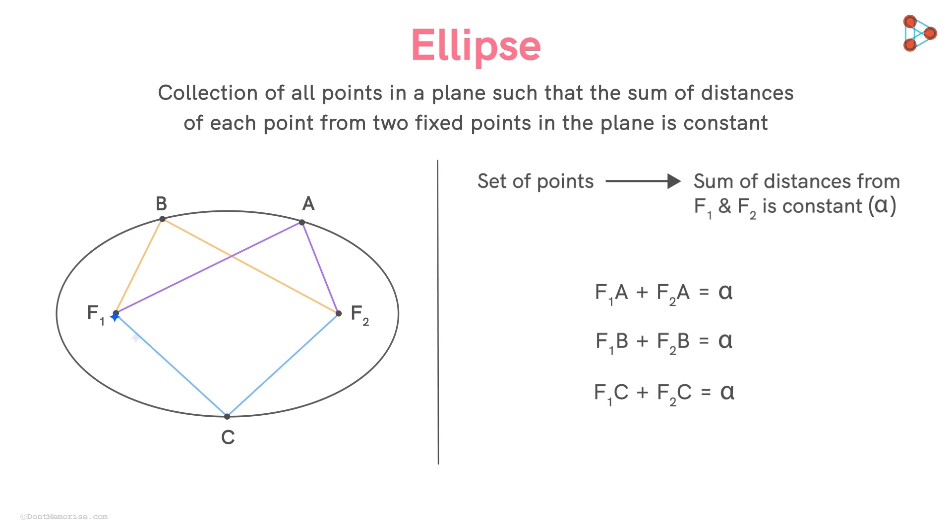Each fixed point F1 and F2 is called the focus of the ellipse. And together they are called the foci of the ellipse.